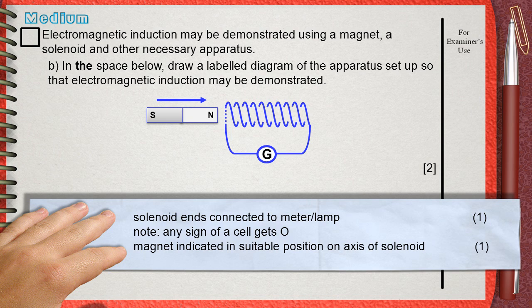This is the first mark. The second mark is for drawing the magnet in a suitable position on the axis of the solenoid. And we drew our magnet in a perfect position to the solenoid.